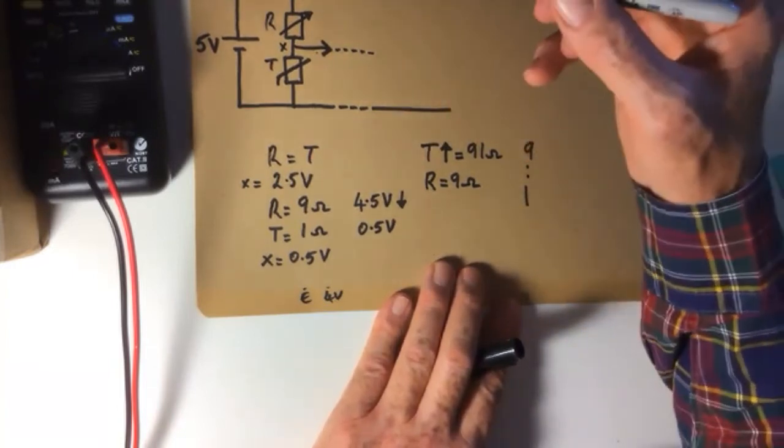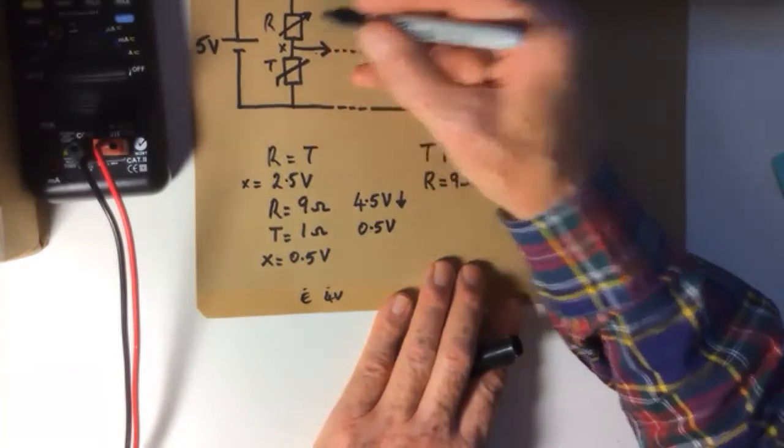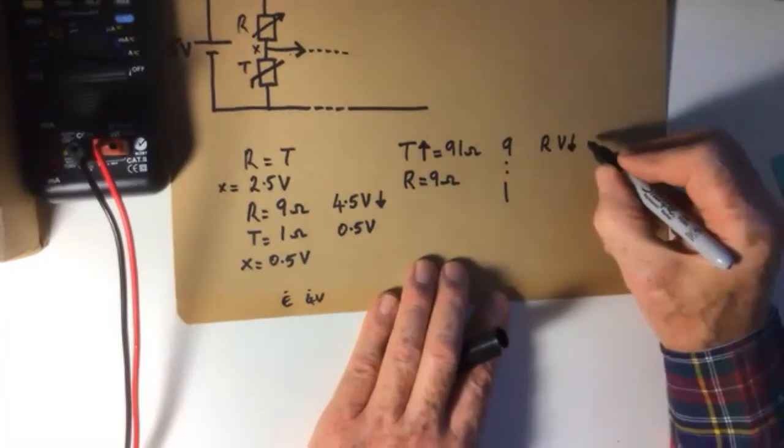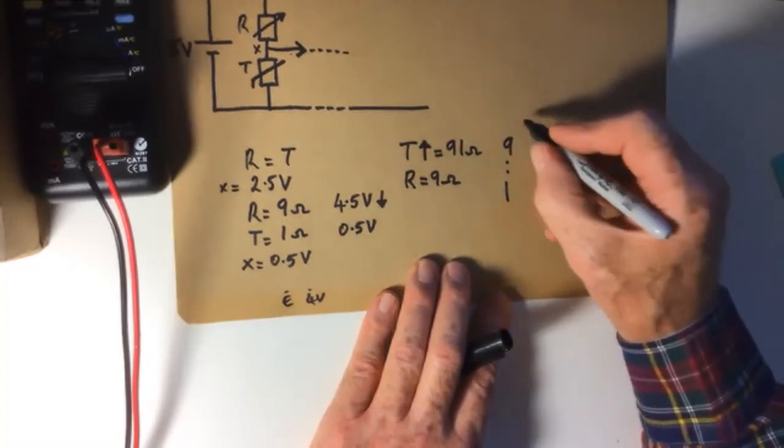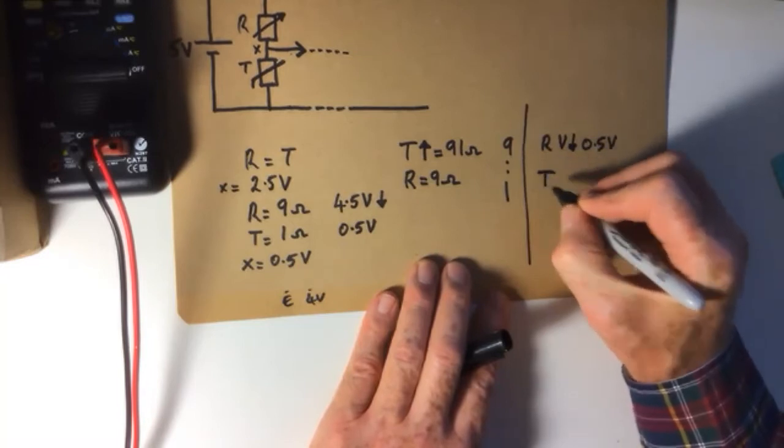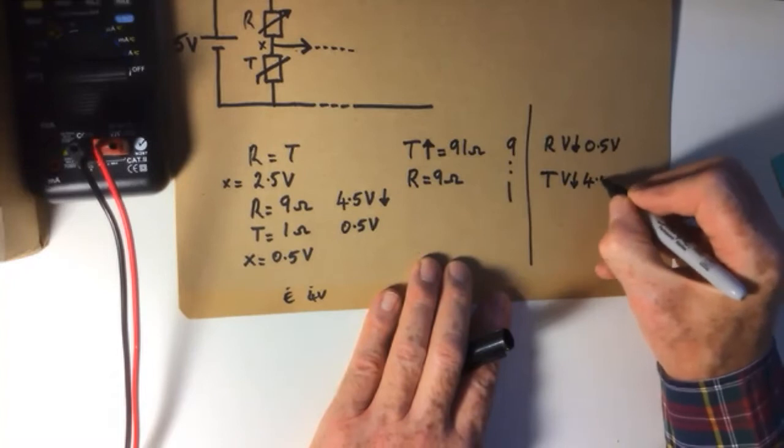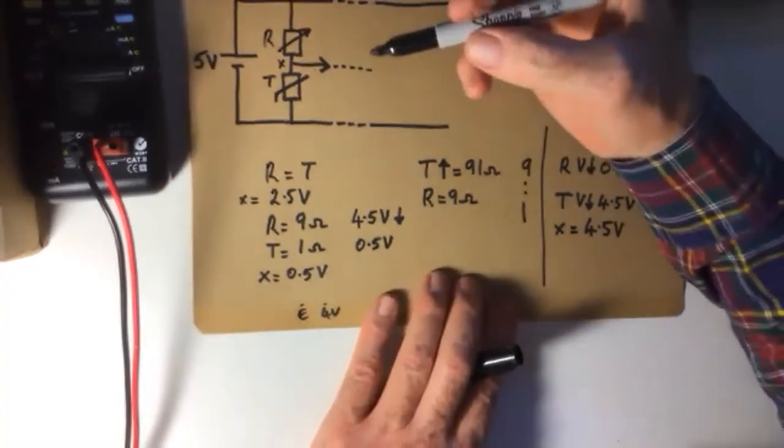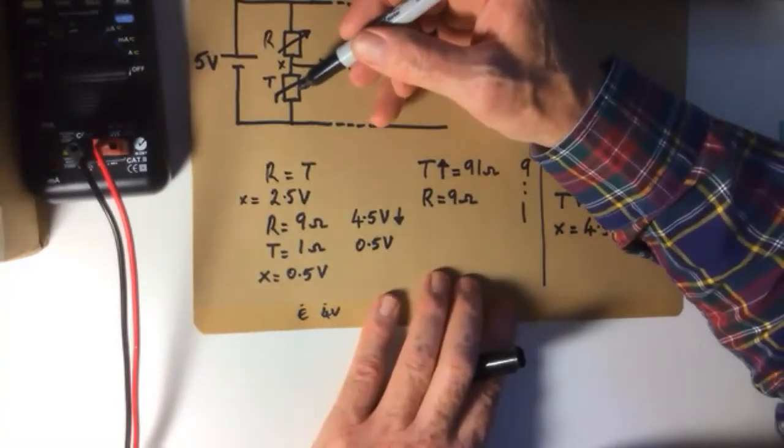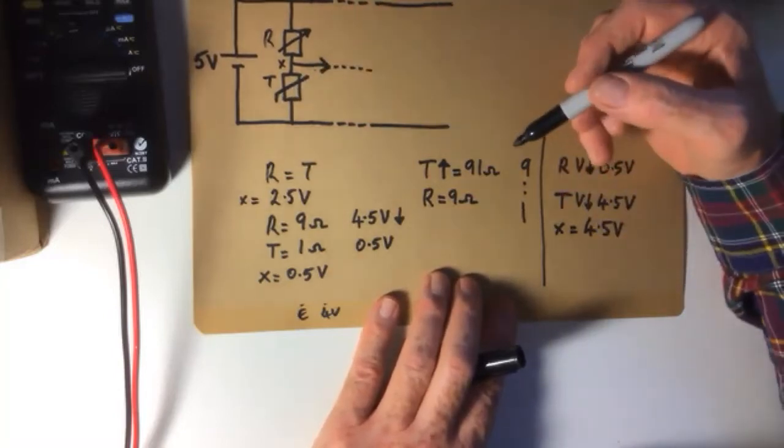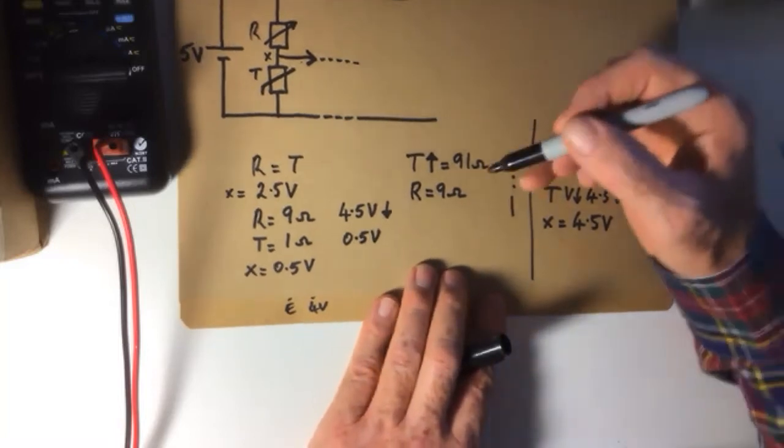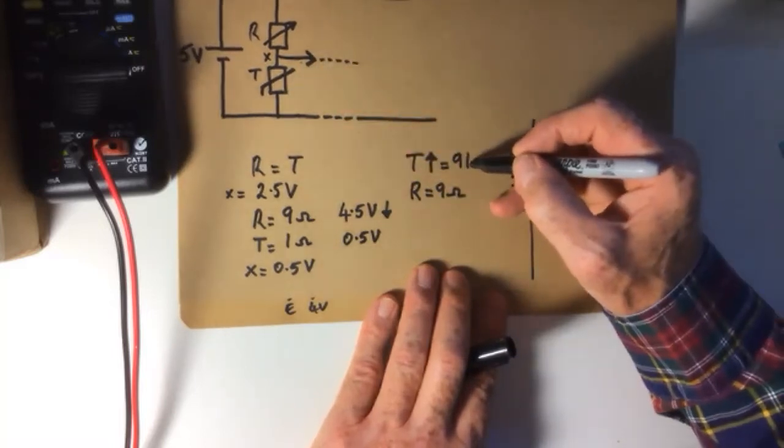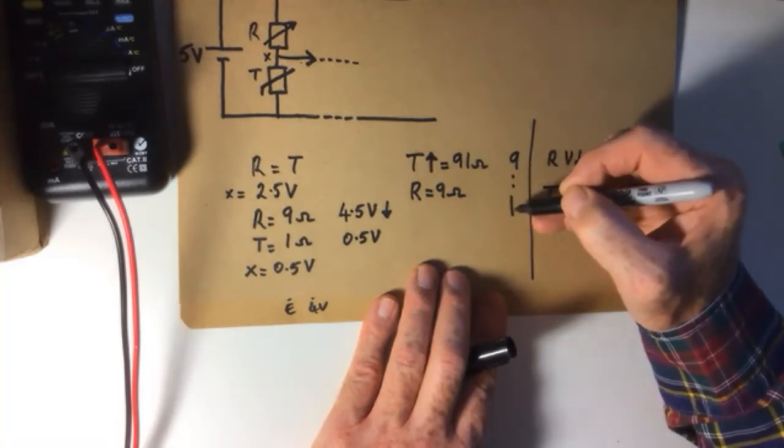So now, one-tenth of the voltage is dropped here. So now across R, the voltage goes down by 0.5 of a volt. And at T, the voltage will go down by 4.5 volts, which means that X, the voltage equals 4.5 volts. So when T changes, which it will do because it's a thermistor and it's built to change its resistance with temperature, as its resistance changes, the volt drop changes. So what happens is, as the resistance of T goes up, more volts are dropped across it because it's dropped in that ratio.